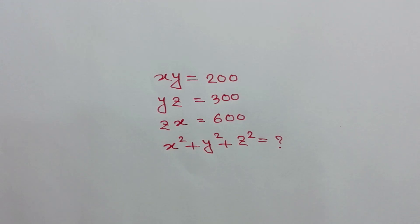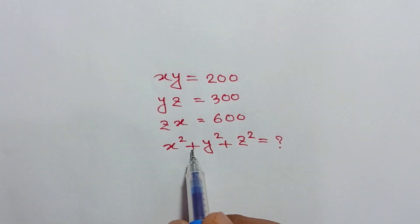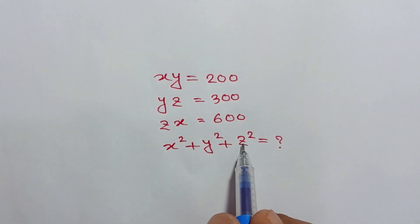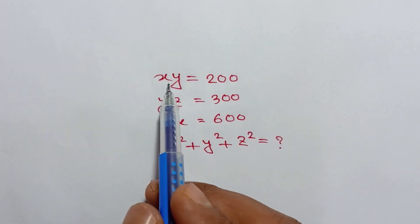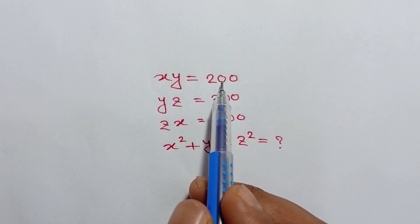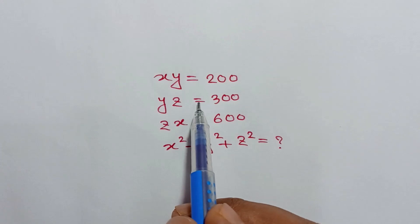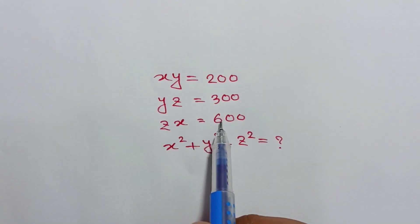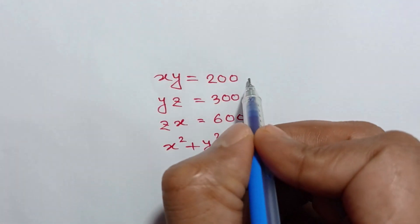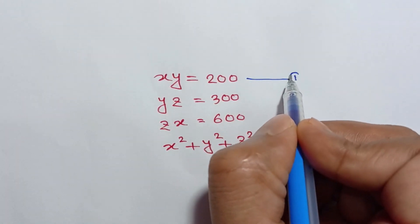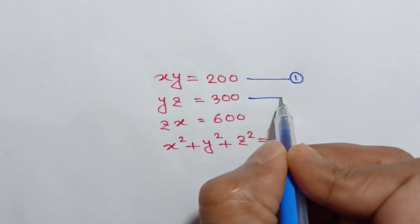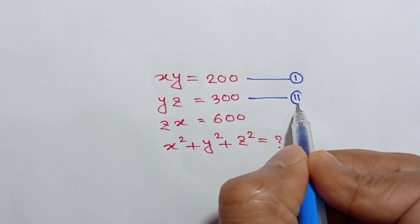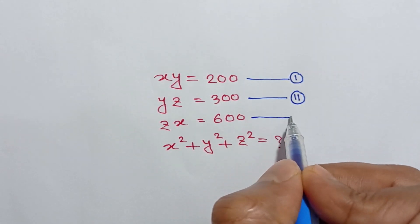Hi everyone. In this video I am going to show how to find the value of x² + y² + z², where xy is equal to 200, yz is equal to 300, and zx is equal to 600. Let's call these equation number one, equation number two, and equation number three.